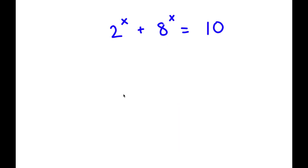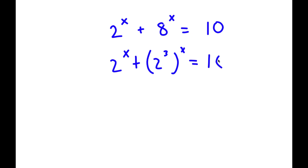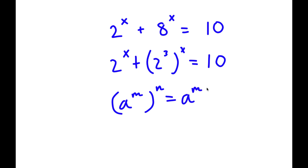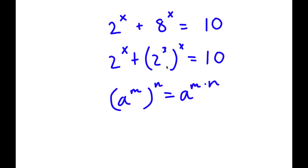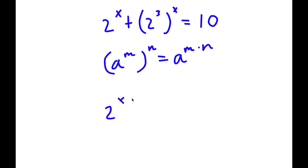In this problem I have 2 to the power of x plus 8 to the power of x equals 10. To solve this I'll rewrite 8 as 2 to the power of 3, so now I have 2 to the power of x plus 2 to the power of 3 to the power of x equals 10. Using the rule a to the m to the n equals a to the m times n, this gives 2 to the power of 3x.